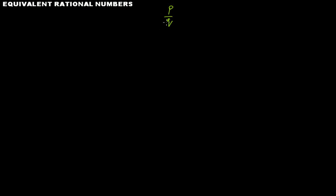If you have to find equivalent rational numbers of a given rational number p over q, what you have to do is multiply the numerator and the denominator with the same number. Let's say a is any arbitrary number. So if you multiply p with a and q with a — say p times a gives you x and q times a gives you y — then x over y is an equivalent rational number of p over q.